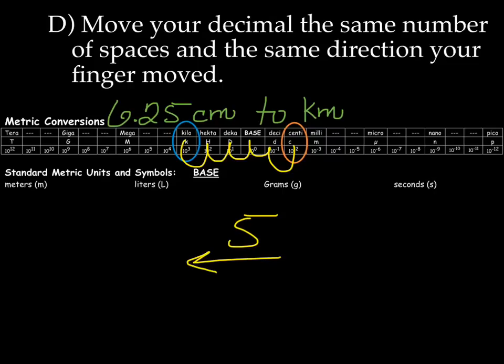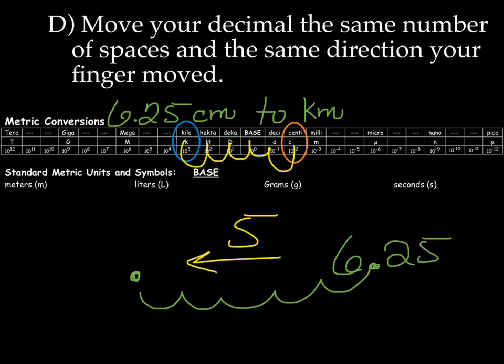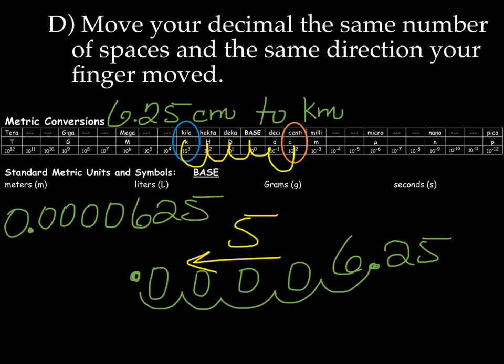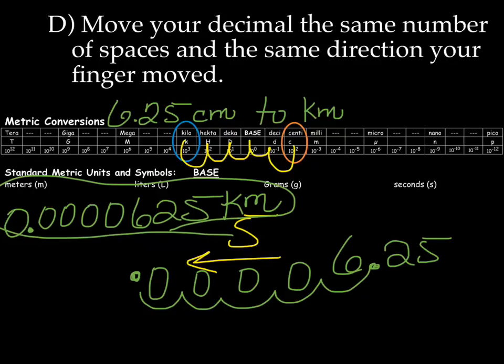Now we're going to move the decimal the same number of spaces and the same direction your finger moved. So if we go back to our problem, I had 6.25. So I need to move the decimal how many times? Five times to the left. One, two, three, four, five. So the decimal is now there with four zeros in front of it. So our new answer is going to be 0.0000625. And the new unit is now kilometers.